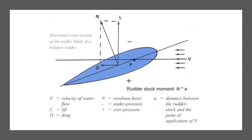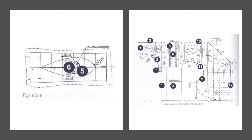In the diagram, A is the distance between the rudder stock and the point of application of N. N is the resultant force, which is negative under pressure and positive if it's over pressure. V is the velocity of water flow, L is the lift, and D is the drag of the rudder, which should be at a minimum.